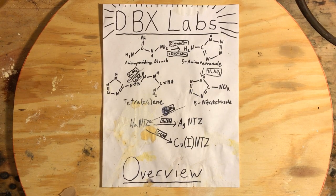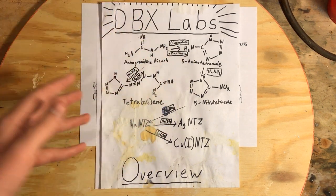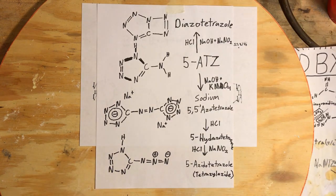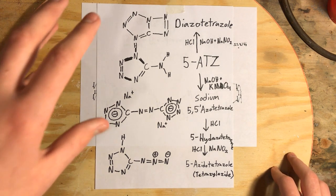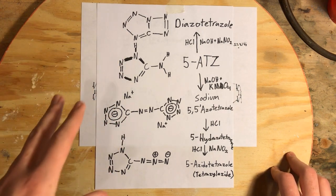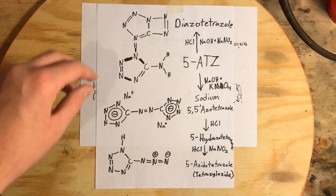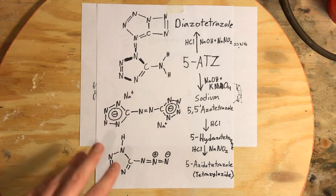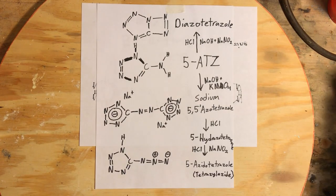Hello everyone and welcome back to DBX Live. Before we get to today's video, I'd like to go over what I plan to do with this channel now that we've completed everything on the initial chapter sheet. Continuing on with the tetrazole derivatives that Engager listed in his paper, there are several highly energetic derivatives we can go towards from just the basic 5-aminotetrazole compound, which I have a good amount of. If I ever have to make more, I have a good amount of this aminoguanidine bicarbonate.